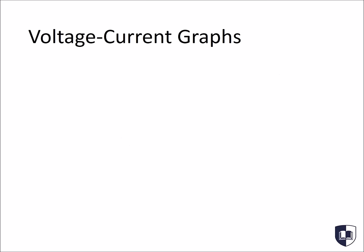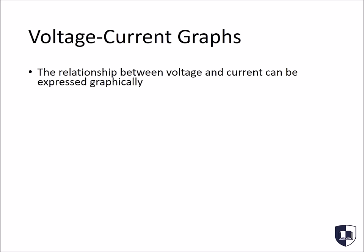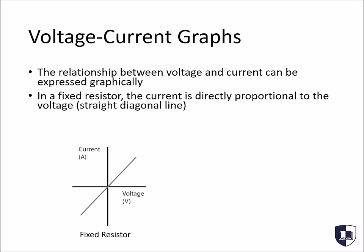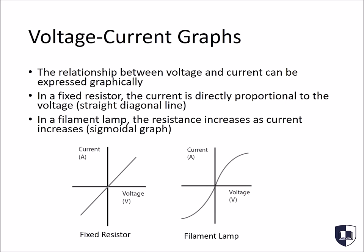Another part of the BMAT syllabus states you should be aware of the voltage-current graphs for fixed resistors and for filament lamps. We can express this relationship graphically, with current on the y-axis and voltage on the x-axis. In a fixed resistor, the resistance will always remain the same. As such, if you increase the current, you increase the voltage. The current is directly proportional to the voltage. It is shown here in this graph as a straight diagonal line. In a filament lamp, however, the resistance is not fixed. As the filament gets hotter, the resistance increases. And as such, you get a sigmoidal-shaped graph instead. Note that for the BMAT exam, these are the only two graphs you need to know relating current and voltage.